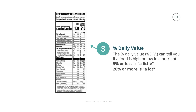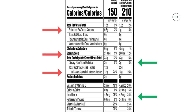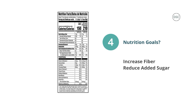As a reminder, 5% or less is a little, so most people will want to choose foods lower in saturated fat, added sugars, and sodium, and 20% or more is considered a lot — most people will want to choose foods higher in fiber, vitamin D, potassium, calcium, and iron. So this food alone, not combined with milk, has 3% saturated fat, 9% sodium, 24% added sugars, 8% fiber, 10% vitamin D, 25% iron, and 0% potassium.